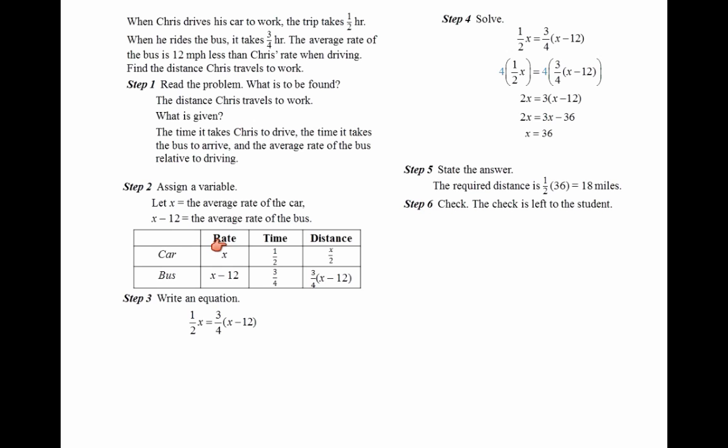Setting up the chart, we record the rate, time, and distance. The car, the rate we set is x. For the bus would be x minus 12. The time is given to us as one-half and three-fourths. The distance is rate times time, x times one-half, or x over 2. Three-fourths times the rate, which is x minus 12. We're going to set these two equal to each other. So this is my equation.